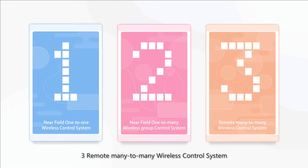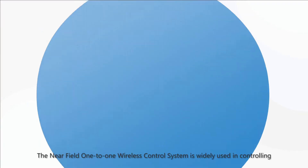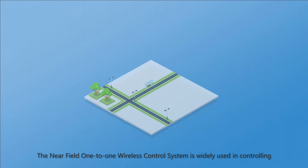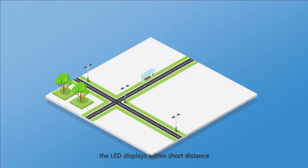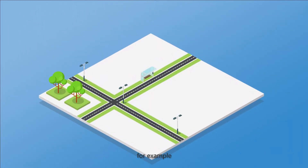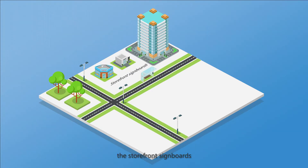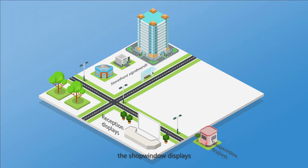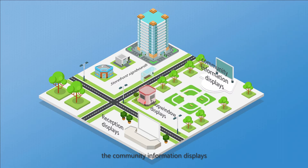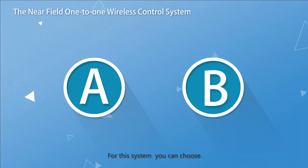The Near Field 1-to-1 Wireless Control System is widely used in controlling LED displays within short distance. For example, the storefront signboards, the reception displays, the shop window displays, and the community information displays.